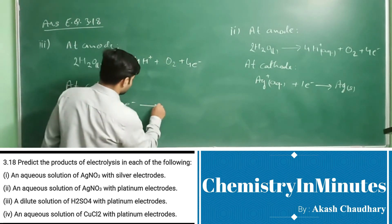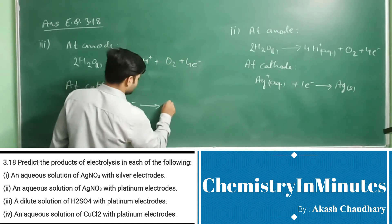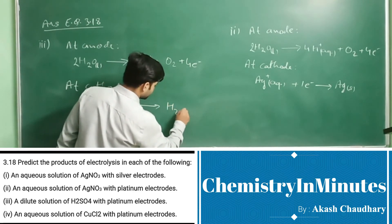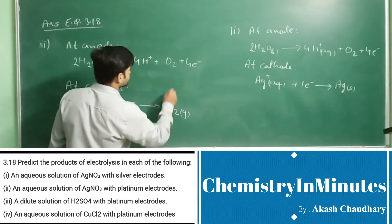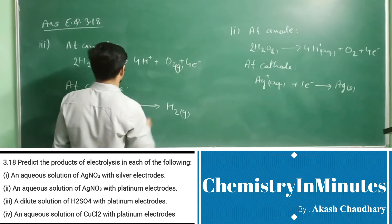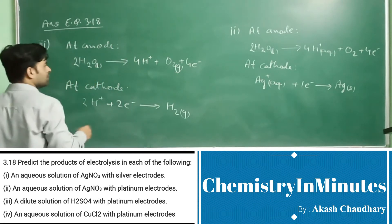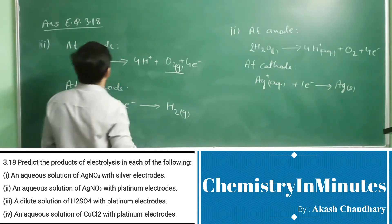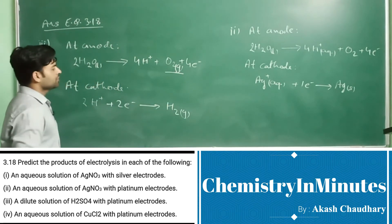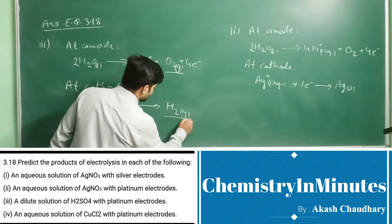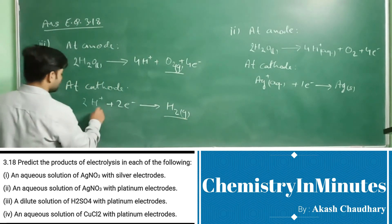At cathode, hydrogen gas will be formed: 2H⁺ + 2e⁻ → H2(g). So at anode oxygen is produced and at cathode hydrogen is produced.